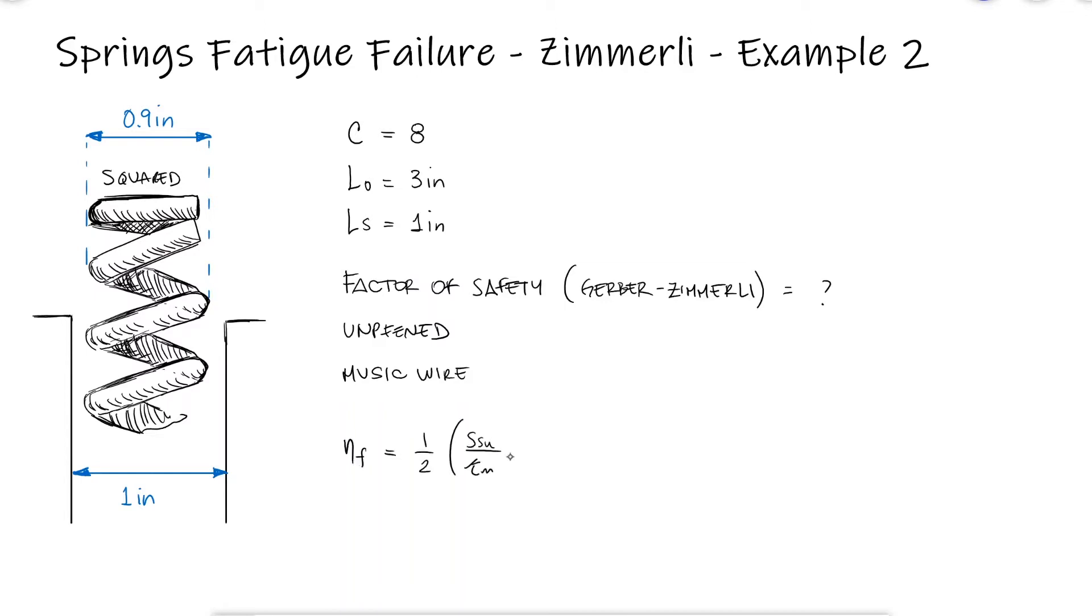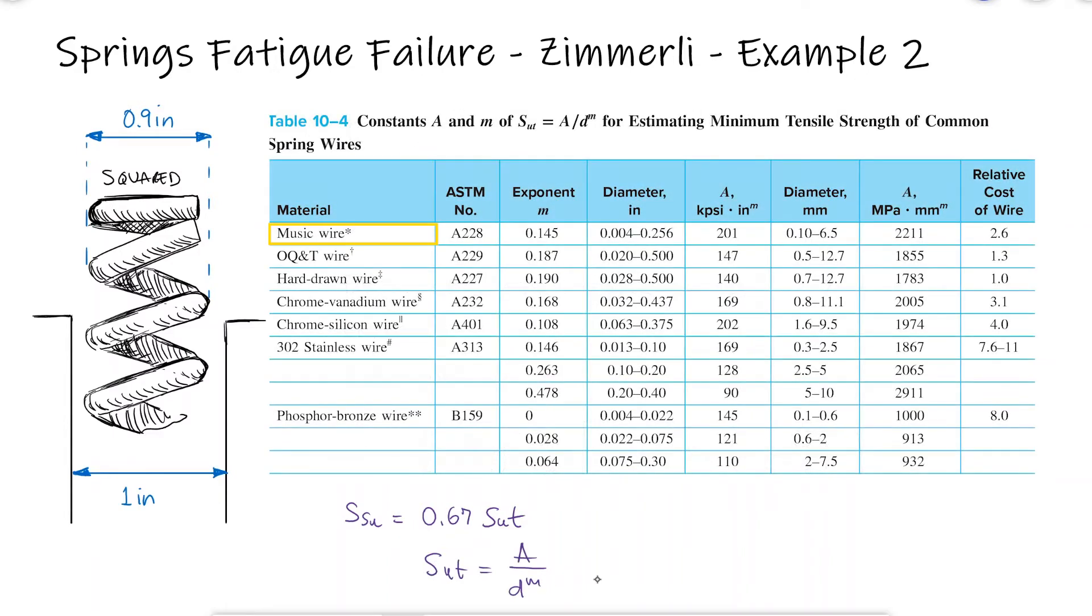Just like in that previous video, we know that for the factor of safety, we need the torsional modulus of rupture, and for it, the ultimate strength. For music wire, we have A equal to 201 and M equal to 0.145.